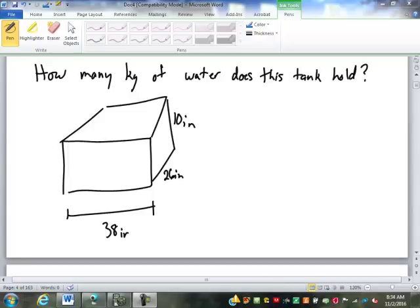So for this one, figure out how many kilograms of water this tank holds. Well, we went over yesterday that there is an equivalence between metric mass and volume. Remember, one gram is the mass of one milliliter of water. So if we have this in milliliters, we can find the grams and then, of course, the kilograms.